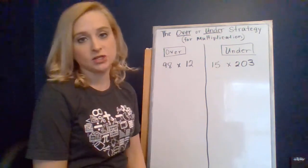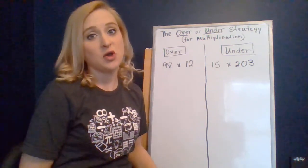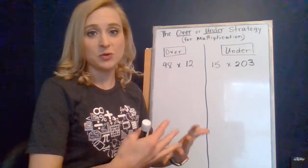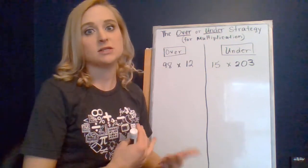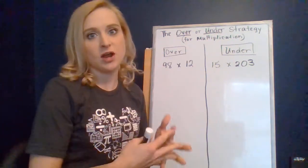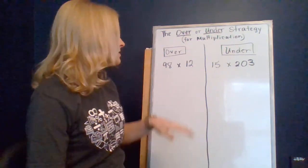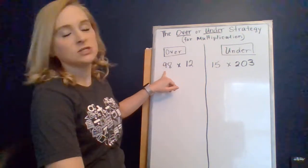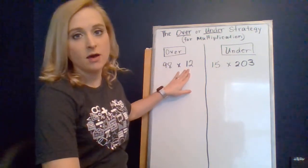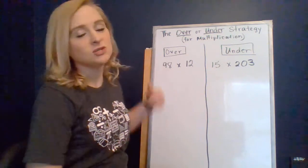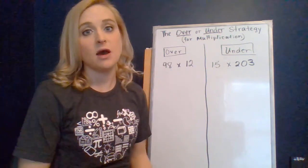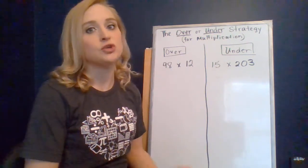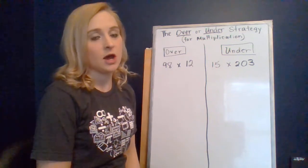In the over strategy, this is where we go over the number of groups by a little bit and then we subtract the extra that we actually have. So if we were going to do the problem 98 times 12, we could really change 98 to be 100 because I see that it's only two groups away from being 100.